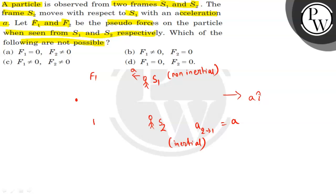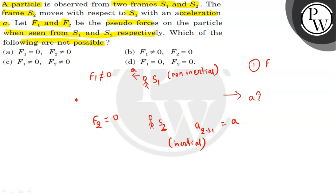S2 is steady, meaning if there is no acceleration in S2, then F2 will be 0. But if S1 is moving with acceleration, then F1 will never be 0. So in the first case, F1 is not equal to 0 and F2 is equal to 0 — so this is possible.